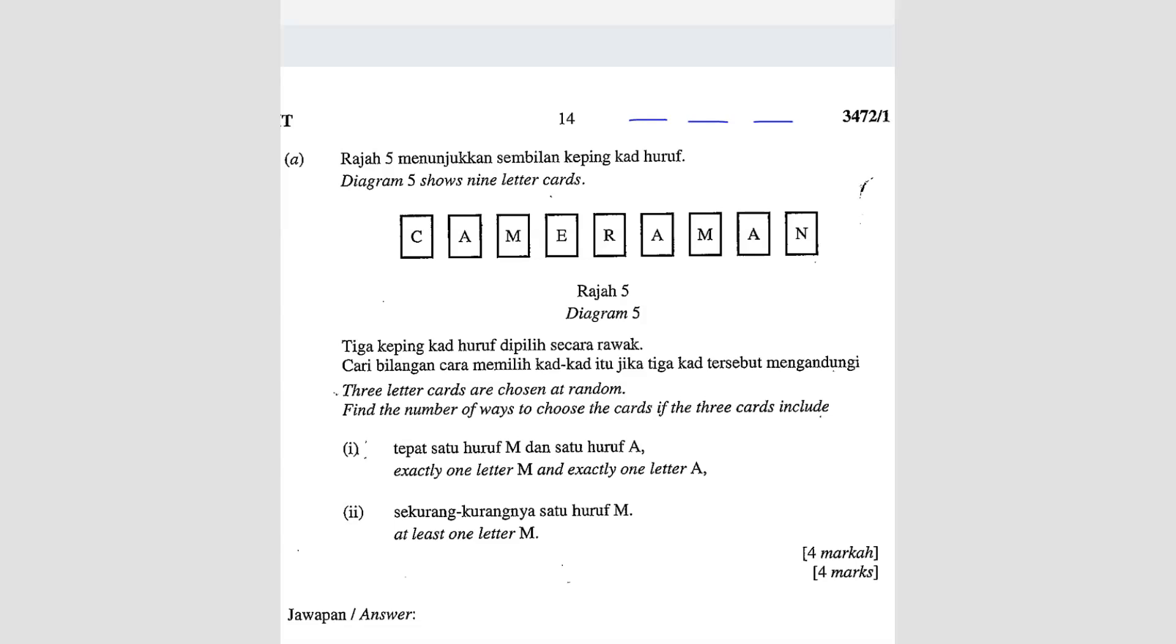1, 2, 3. Now the first question says that exactly 1 letter M and exactly 1 letter A. So first of all, we are just going to choose 3 cards. It doesn't matter the arrangement. It doesn't matter if C has to be here or M has to be there. So we're just going to choose. So we're going to use combination.